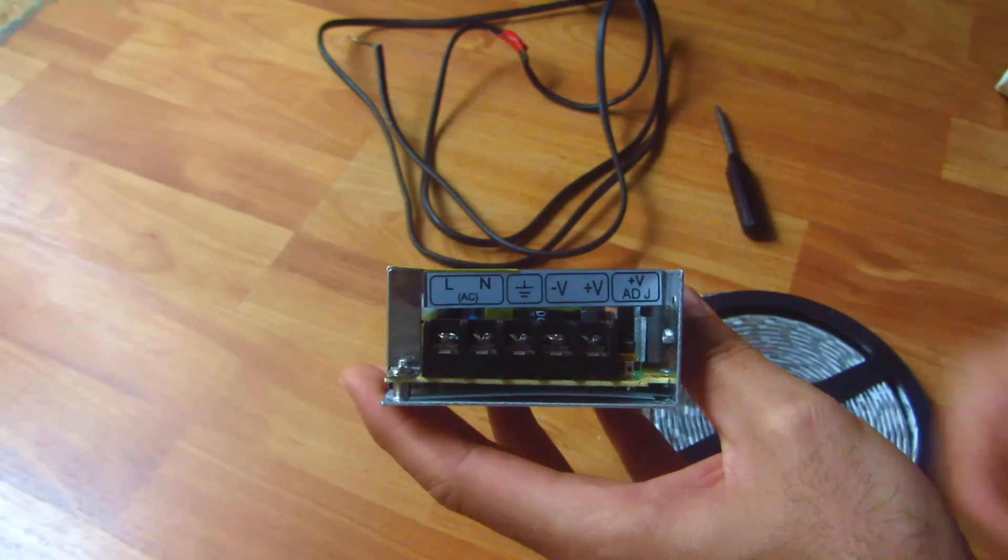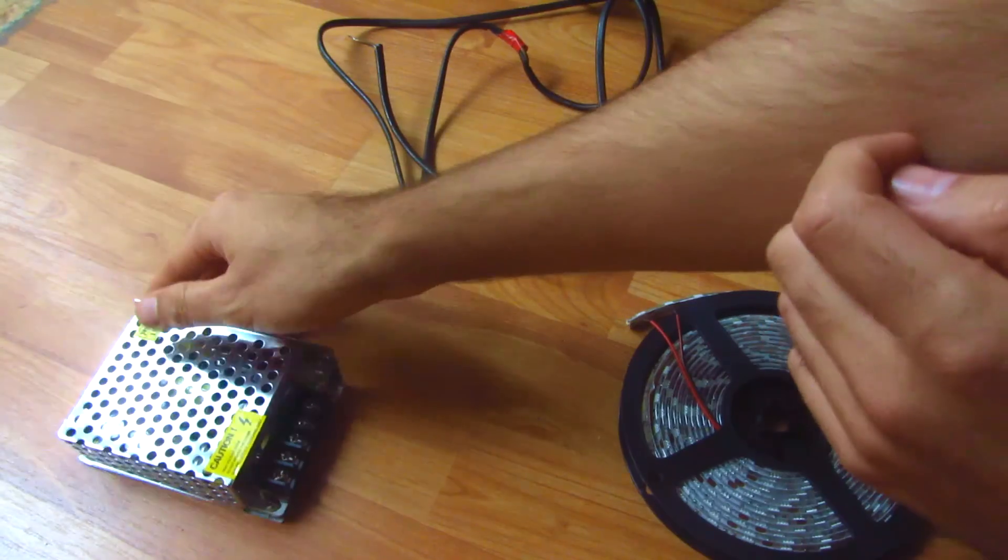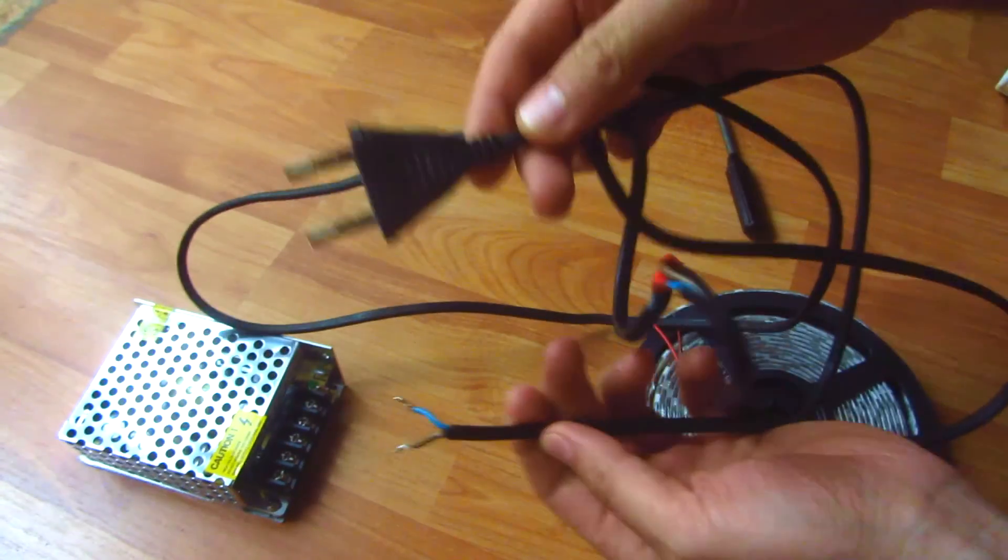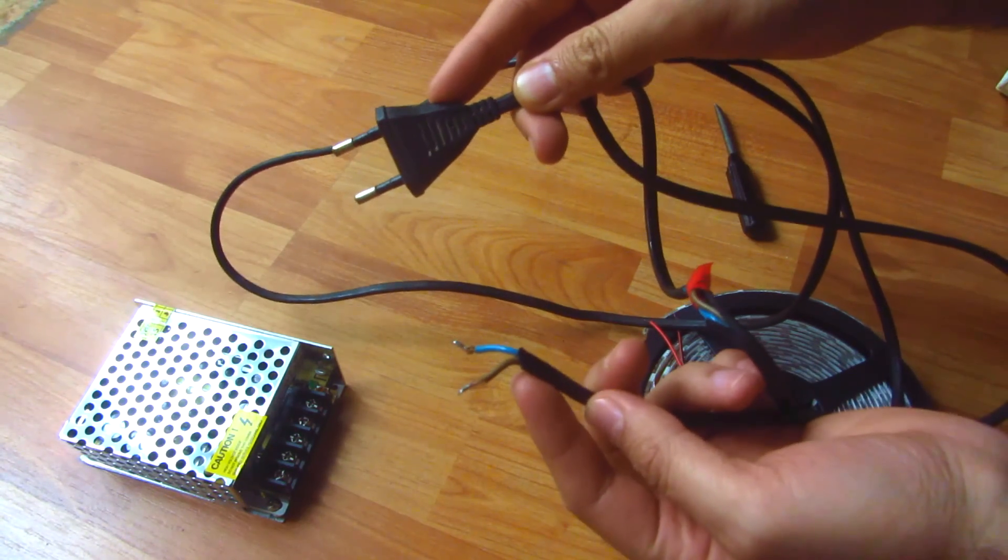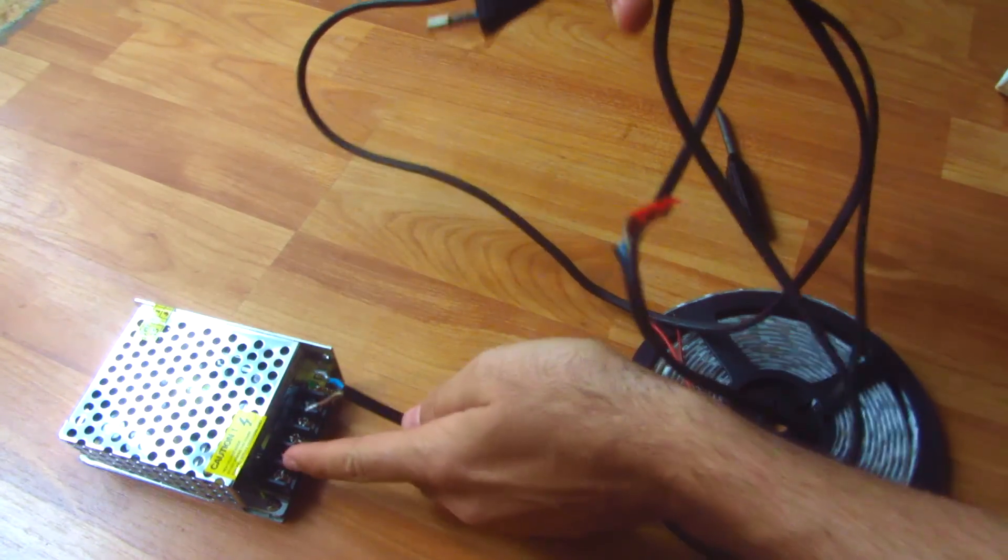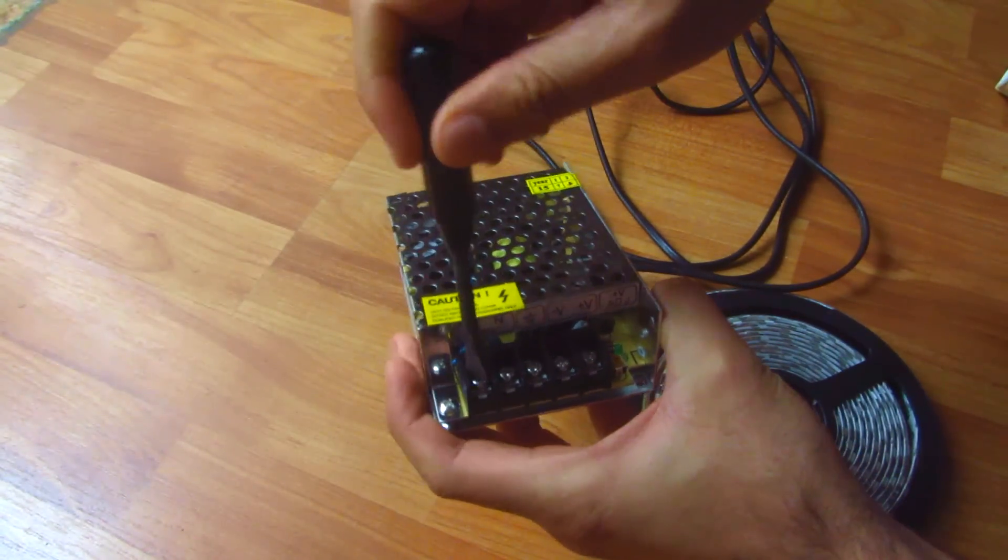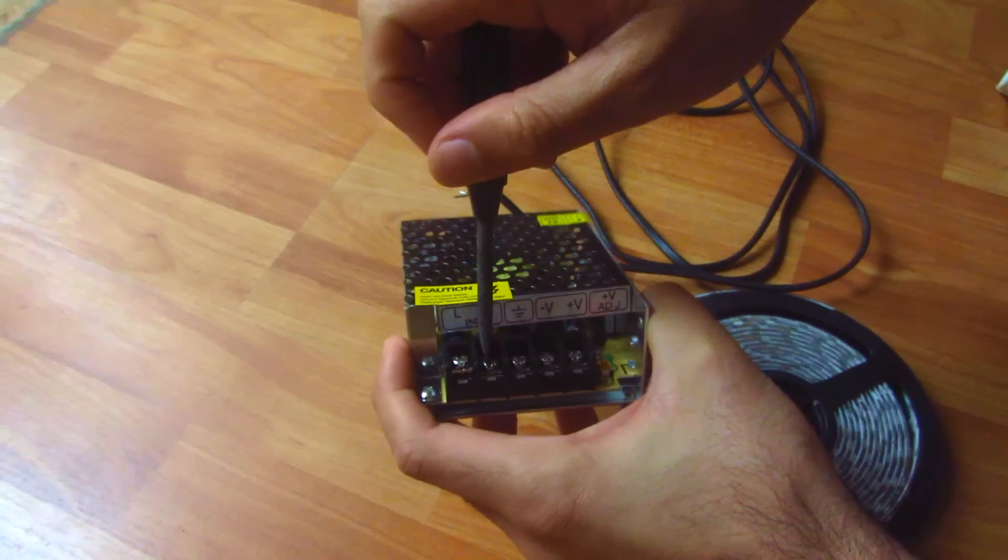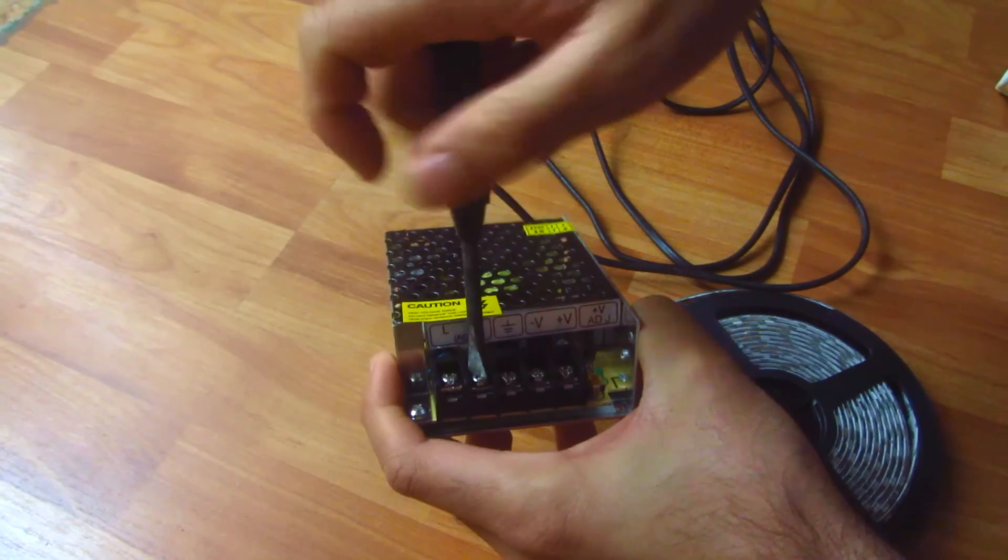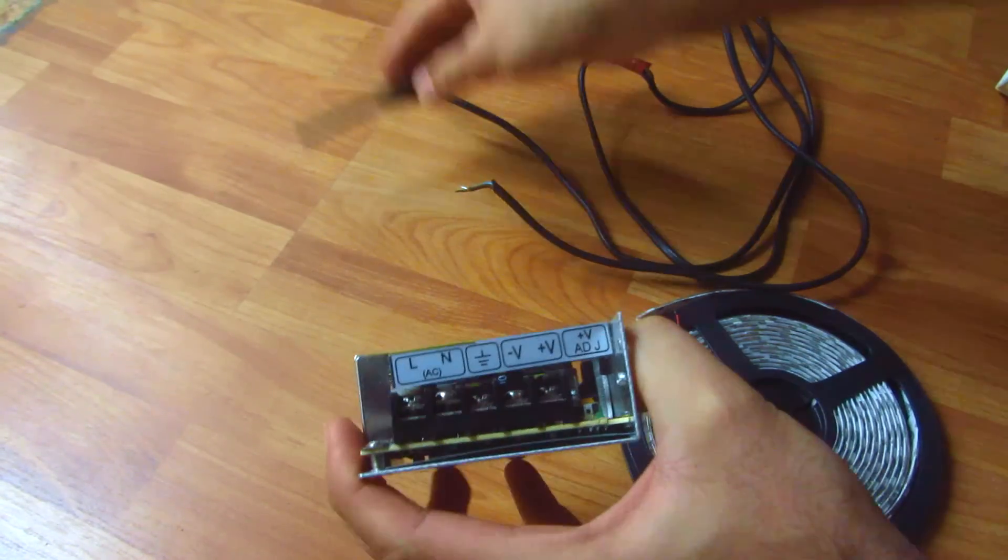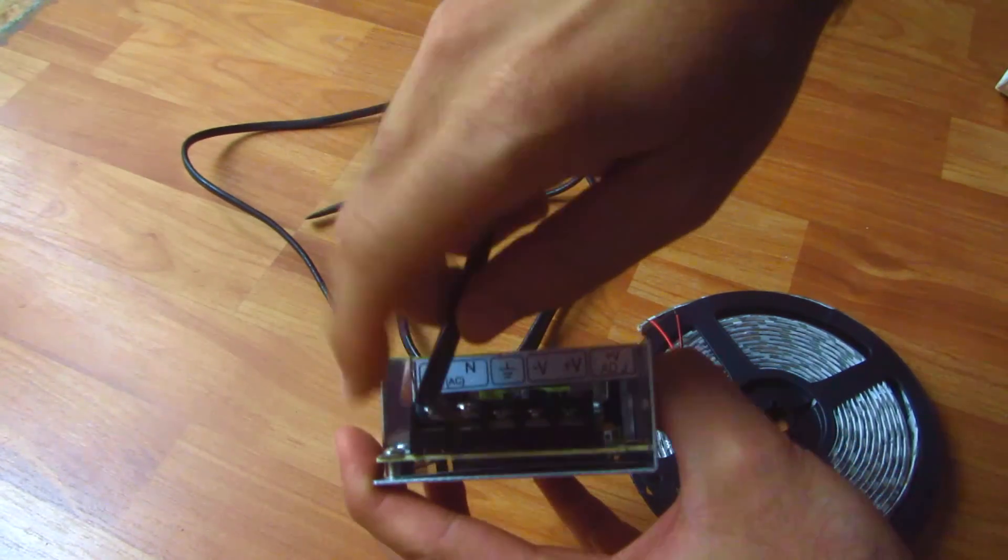I will use a simple cable for the 220 volts. This is going to be inserted into the transformer. Let's take a screwdriver and loosen up these screws. I will insert the cable end, one cable to the left and one to the right.